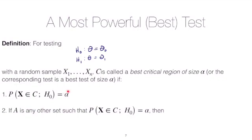and we're doing that with a random sample X1 through Xn, C is called the best critical region of size alpha if it's a test of size alpha, that's what the first condition says.